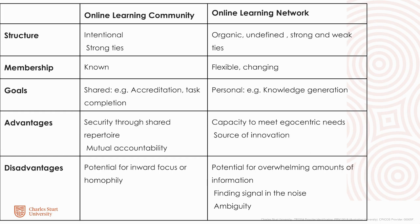Learning networks can include members of a community, but networks tend to be more organic, undefined, and have both strong and weak ties. Some members of the network will be known to each other, and others may be unknown. The membership of a network is far more flexible and usually changing all the time. The goals are personal to each individual, and members may be working towards different goals. The advantage is that the network is there to meet your own personal needs, and by including diverse connections, there is a greater chance of innovation and serendipitous discovery. Unfortunately, a network can include overwhelming amounts of information, making it difficult to find high-quality learning in noisy channels. Learning through a network can also be quite ambiguous, as it's up to the individual to direct and set their own goals.